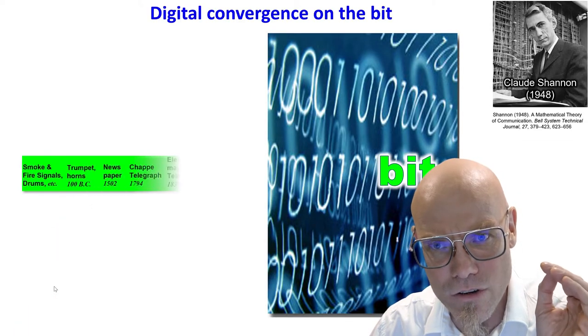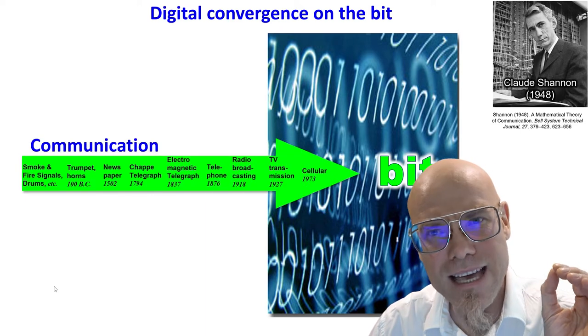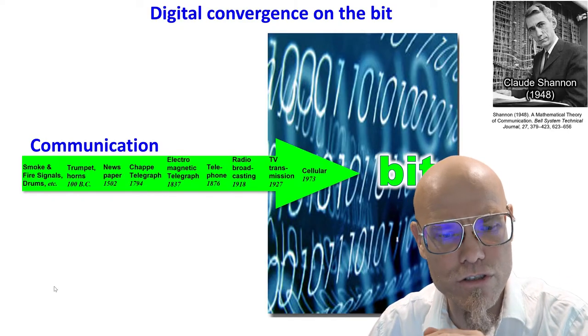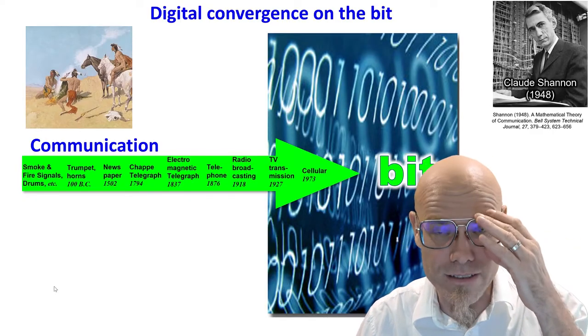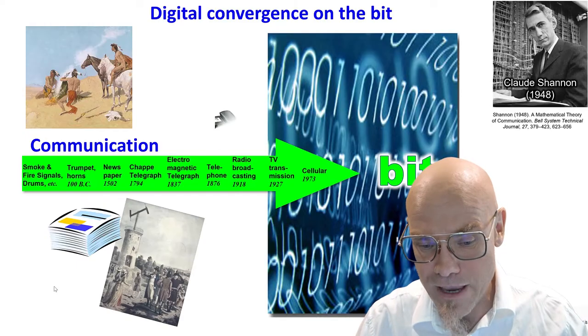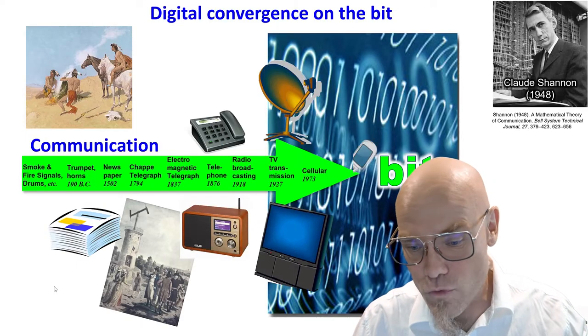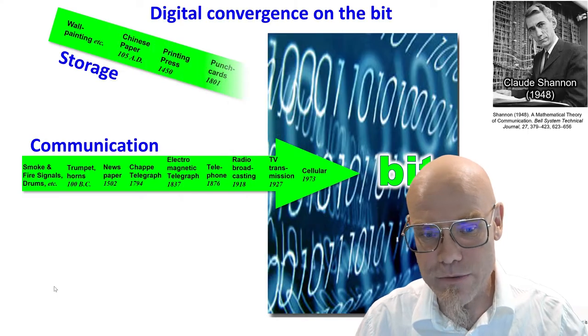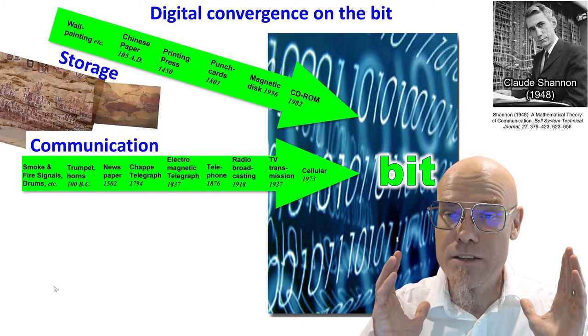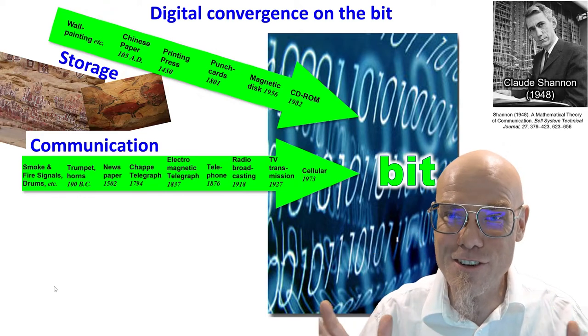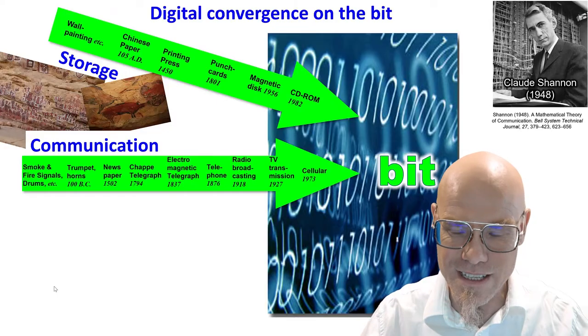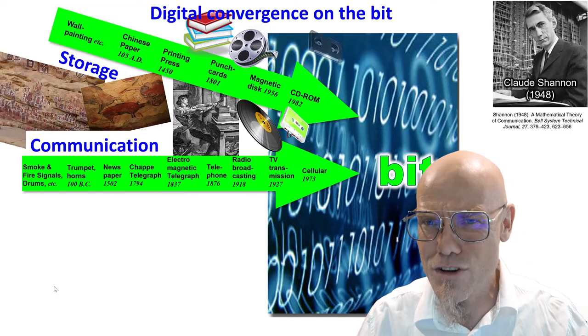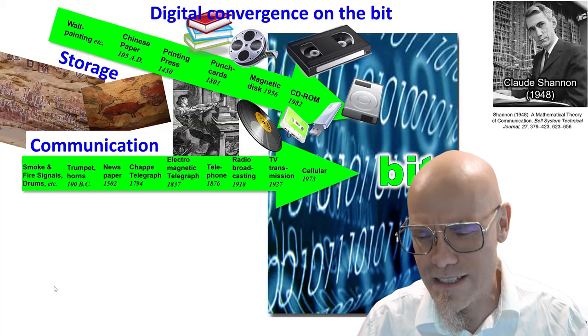Now the bit is so convincing, so useful as a unit of information that all previous information communication technology converged on it. We call it the digital convergence on the bit. So communication, for example, starting with smoke signals, newspaper, the telegraph, any kind of telephony, radio, television, broadcasting was a lot of one-way communication, and then mobile telephony as well. Same as storage. And that goes all the way back to cave paintings, the first technological information storages. Printing press really changed the course of history.